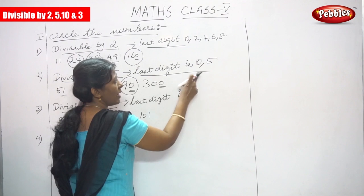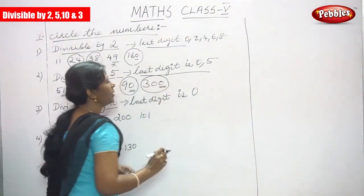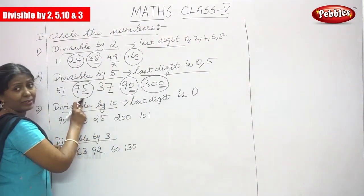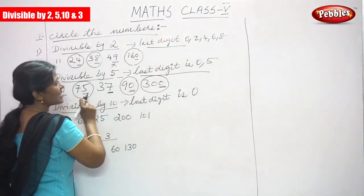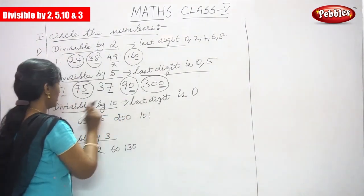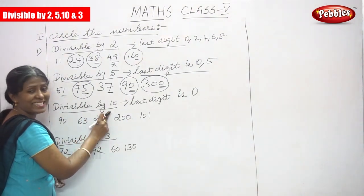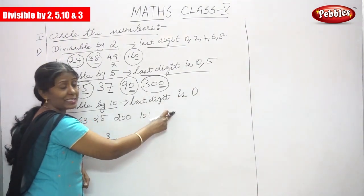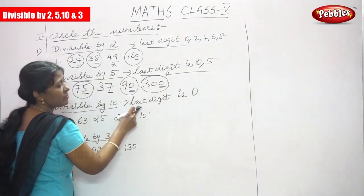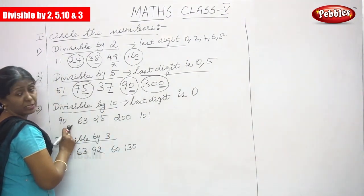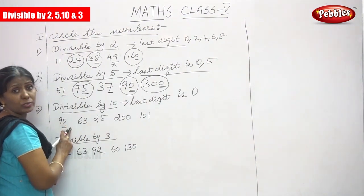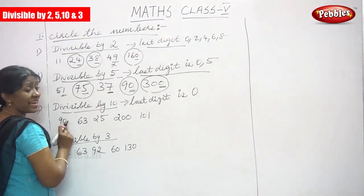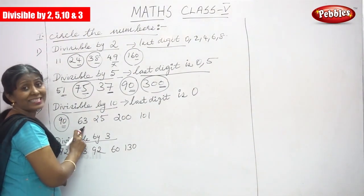Third question: divisible by 10. The rule is if the last digit ends with 0, it is divisible by 10. Number 90: the last digit is 0, so it is divisible by 10 because the last digit ends with 0. Circle the number. Next is 63: the last digit is 3, so it is not divisible by 10.